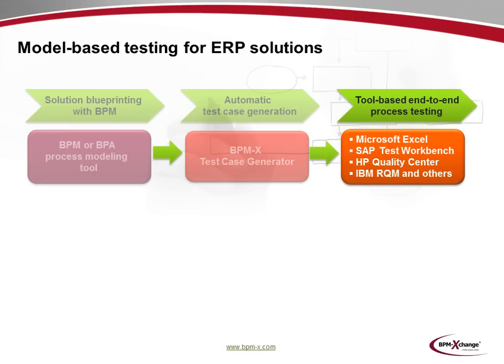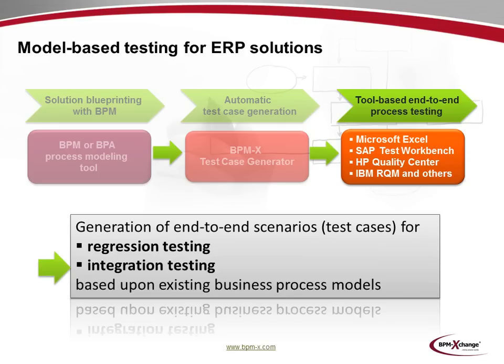The BPMX test case generator addresses tool-based end-to-end process testing by providing deliverables in different formats such as Microsoft Excel, SAP TestWorkBench, HP Quality Center, IBM Rational Quality Manager and Visio, to name a few. Based upon the automatically generated deliverables, there are two basic alternatives for the execution of test cases. Using the Microsoft Excel format, test cases could be executed manually. The professional approach however relies upon test management software like the SAP TestWorkBench and SAP Solution Manager or HP Quality Center. The open interface of BPMX is able to generate any format needed for the processing of test cases in the respective test management tools, be it for regression or integration testing.